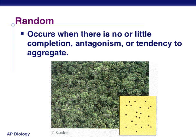Our last pattern is random. Random occurs where there is little competition, little antagonism, or a tendency to bunch together. A lot of plants tend to do random patterning because it's just kind of where those seeds land — wherever they land and the conditions are right, that's where they're going to germinate, put down roots, and grow. Everything's fairly okay, so they're just going to grow wherever they can, wherever their needs are being met, not directly affected by another member of their species or a completely different species.